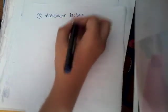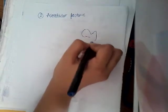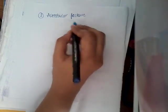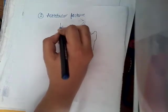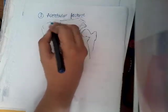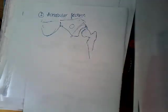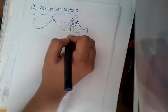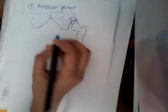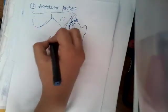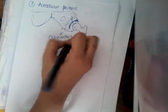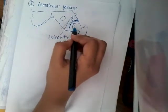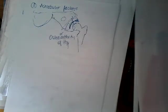The next fracture type is acetabular fracture. The head of the femur articulates with the acetabulum. Whenever there is a fracture in the acetabulum, that is called an acetabular fracture. The complications are relatively few, but because the fracture is in the acetabulum, it can cause osteoarthritis of the hip joint. If not treated, there is formation of fibrous tissue and infection, causing osteoarthritis of the hip.